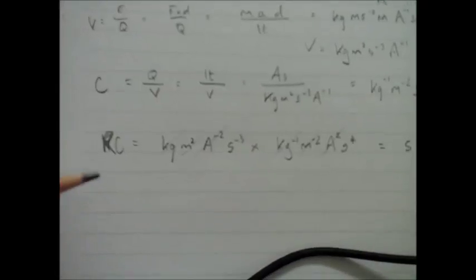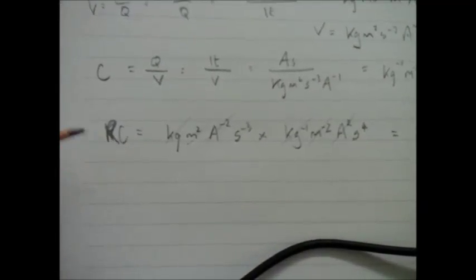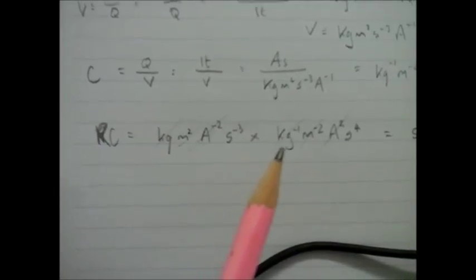So if I combine them to R times C, resistance times capacitance, the base units of R, the base units of C. I notice most of them cancel.